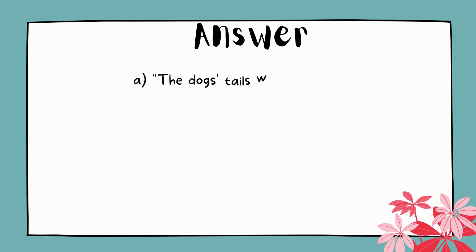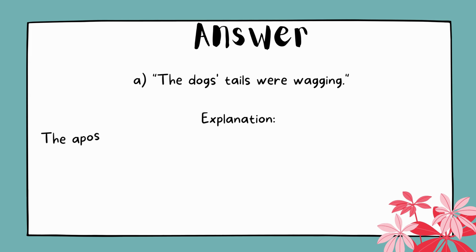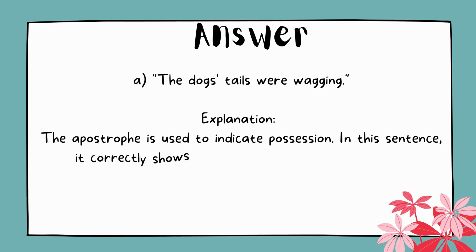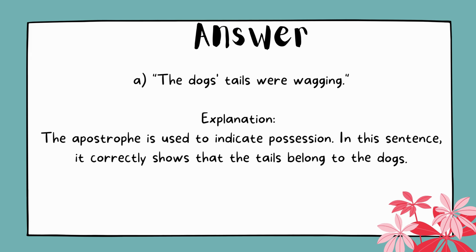The answer is A. The dog's tails were wagging. Explanation: The apostrophe is used to indicate possession. In this sentence, it correctly shows that the tails belong to the dogs.